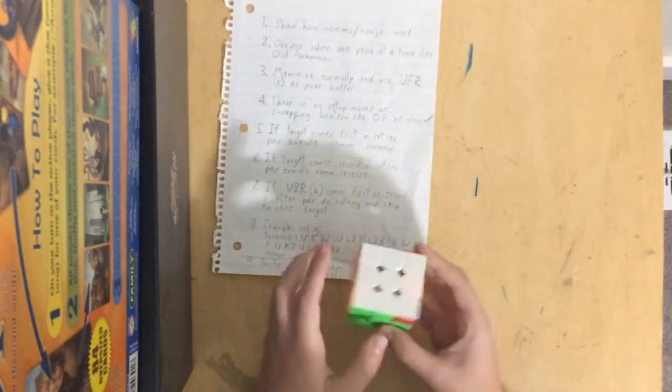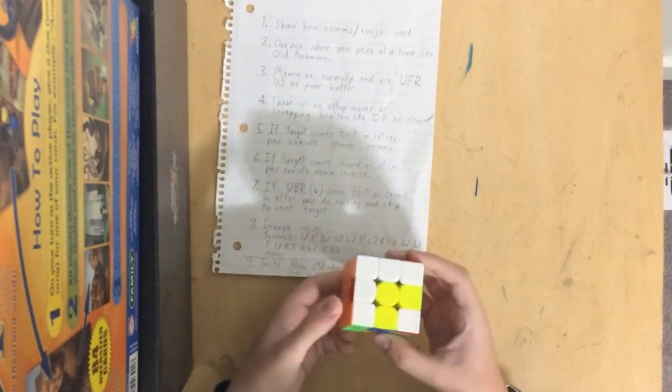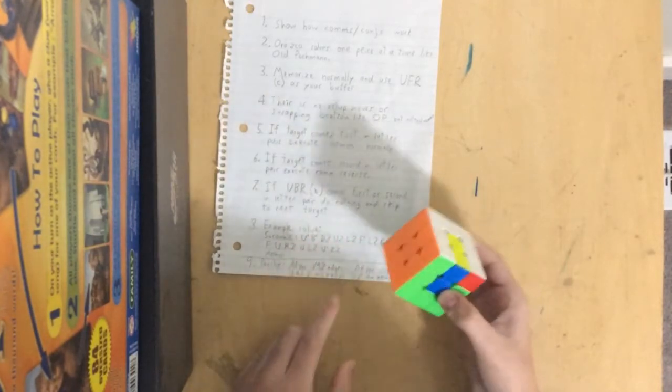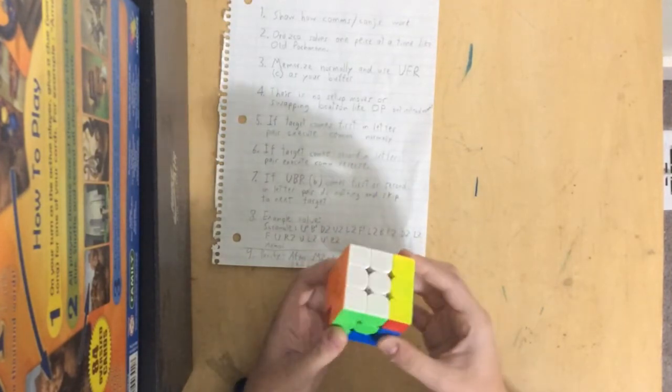So first, let's do the edges. So we do B, and then B, D, and then back to B. Now for this, most people do D' L2, D, M2, D' L2, D, for their parity alg. But what we're actually gonna do is do D, R2, D' M2, D, R2, D'.